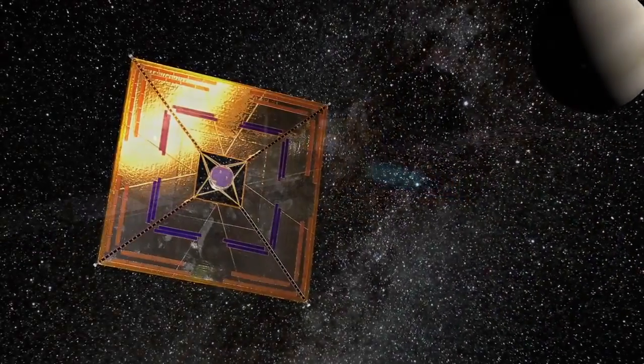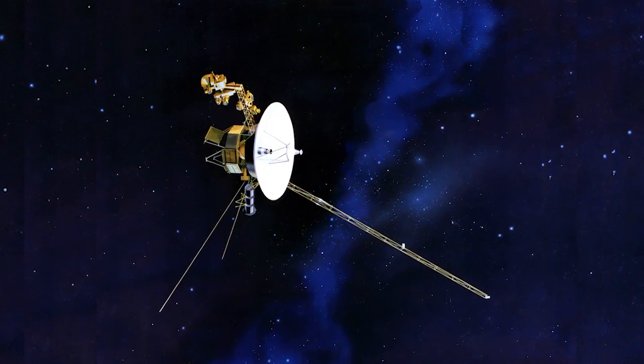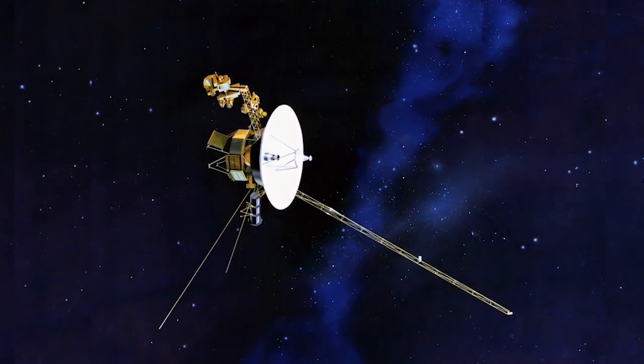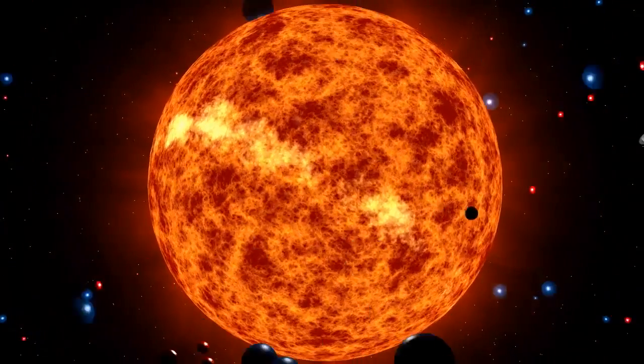Much faster than any current propulsion system. For example, it took the Voyager spacecraft 35 years to reach the edge of the solar system. The Sun continually releases photons and electrons into the solar wind.